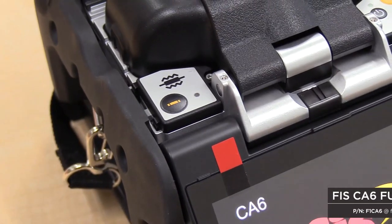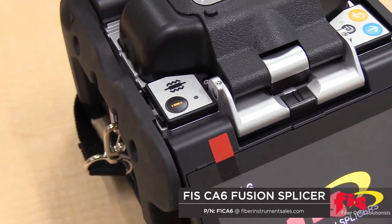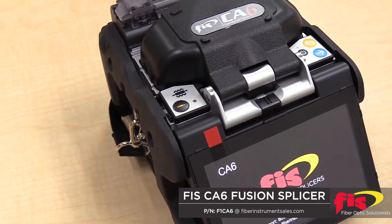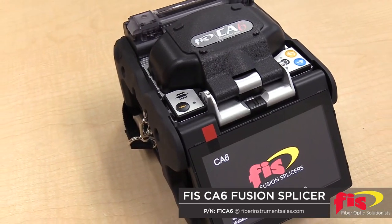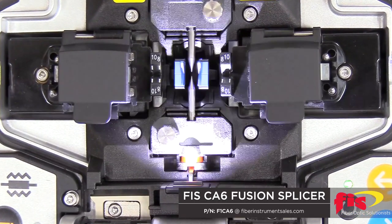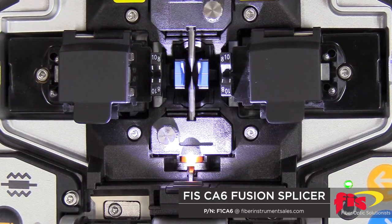The CA-6 Core Alignment Fusion Splicer has a 5-inch touchscreen and an easy user interface. With the contractor in mind, the FIS CA-6 is compact, lightweight and fast with a 6-second splice time and a 15-second heat shrink time.